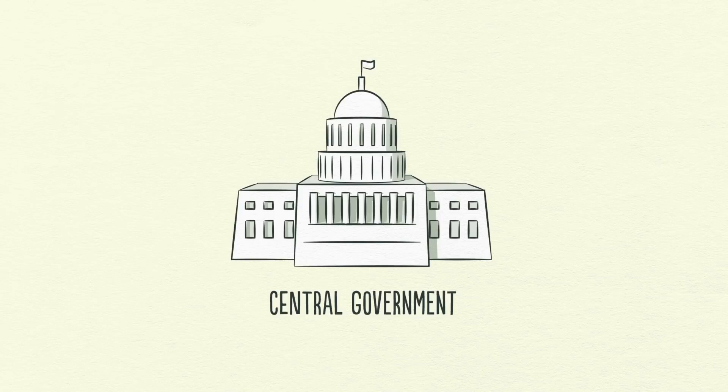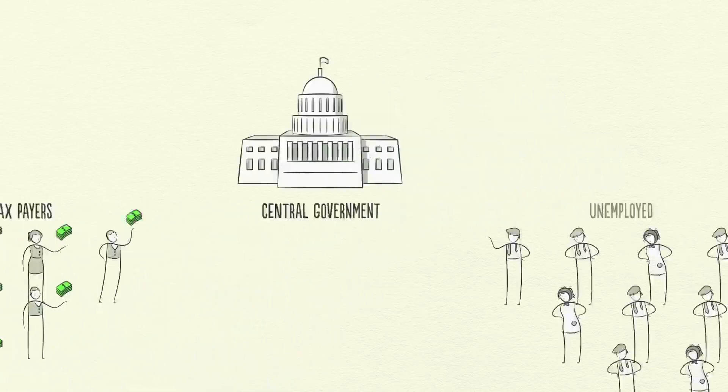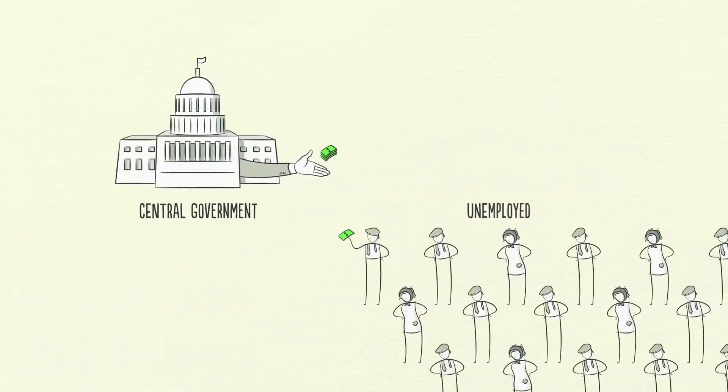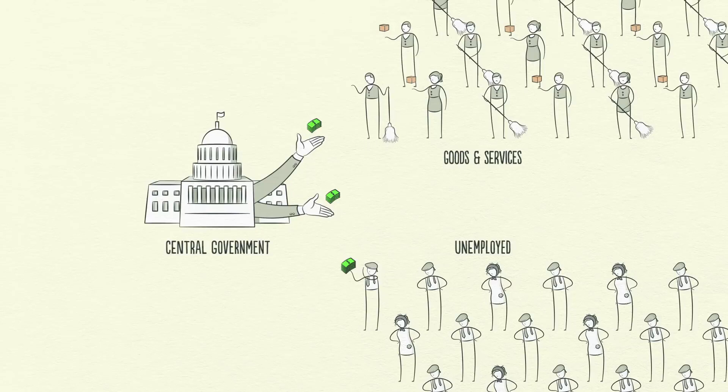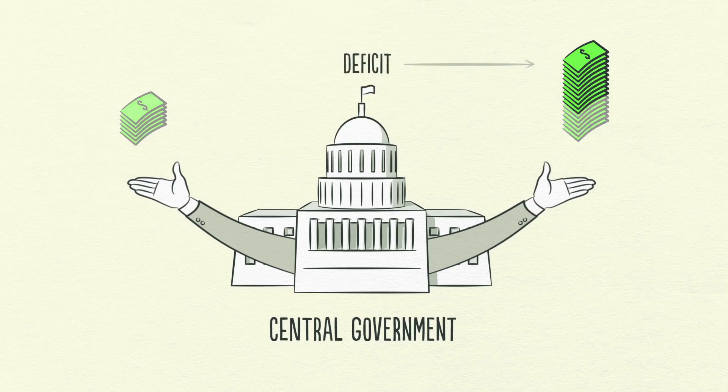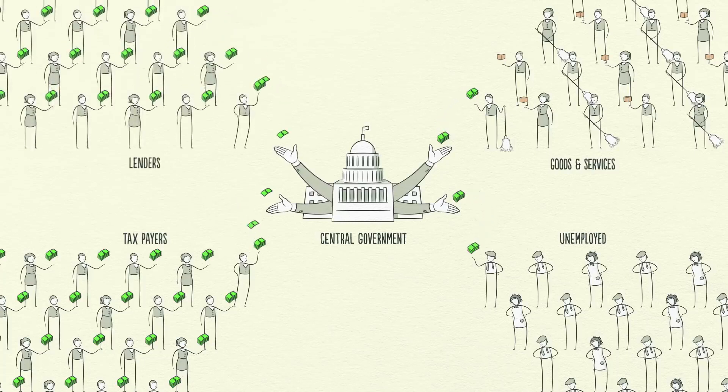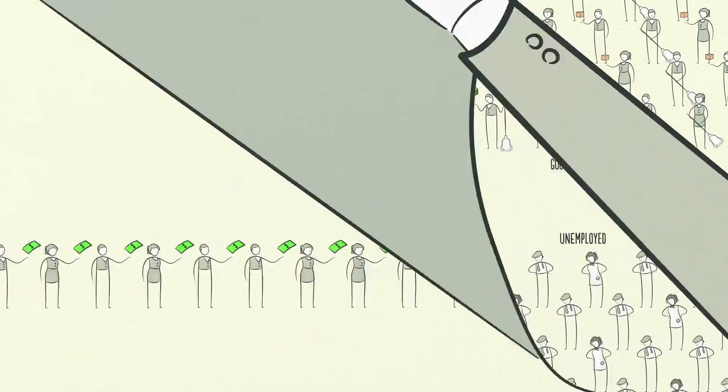All of this impacts the central government because lower incomes and less employment means the government collects fewer taxes. At the same time, it needs to increase its spending because unemployment has risen. Many of the unemployed have inadequate savings and need financial support from the government. Additionally, governments create stimulus plans and increase their spending to make up for the decrease in the economy. Governments' budget deficits explode in a deleveraging because they spend more than they earn in taxes. This is what's happening when you hear about the budget deficit on the news. To fund their deficits, governments need to either raise taxes or borrow money. But with incomes falling and so many unemployed, who is the money going to come from? The rich.